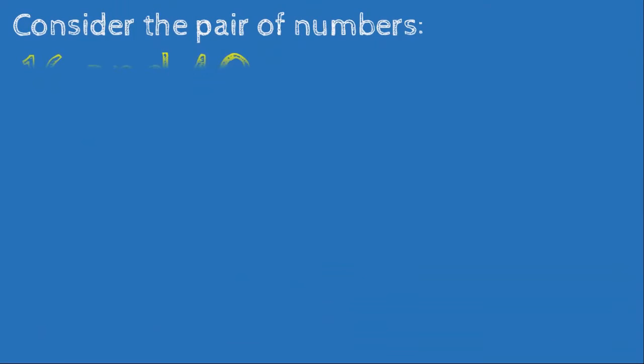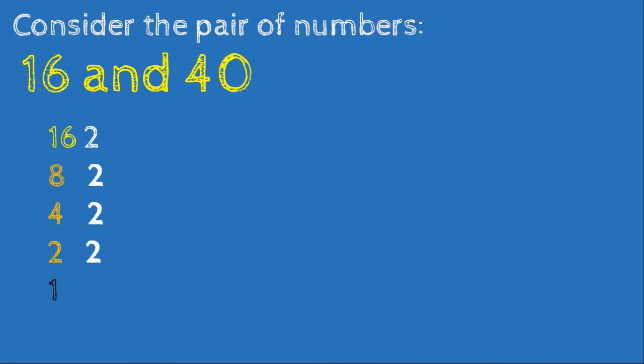Next, consider the pair of numbers 16 and 40. Factors of 16: 16 ÷ 2 = 8, 8 ÷ 2 = 4, 4 ÷ 2 = 2, 2 ÷ 2 = 1. Factors of 40: 40 ÷ 2 = 20, 20 ÷ 2 = 10, 10 ÷ 2 = 5, and 5 is prime so 5 ÷ 5 = 1. Next we multiply to find missing factors.